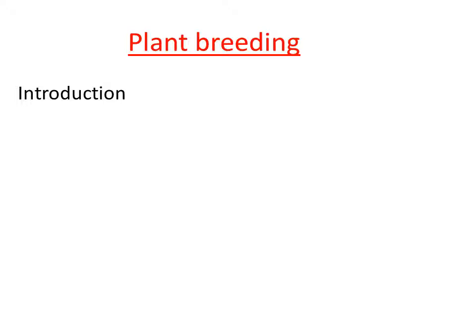On one hand, population keeps increasing, and on the other hand, we cannot increase agricultural land because not all lands are suitable for agriculture. So within the available agricultural land, we have to increase productivity. Is it possible with traditional farming alone? No — with traditional farming only a limited biomass can be obtained.